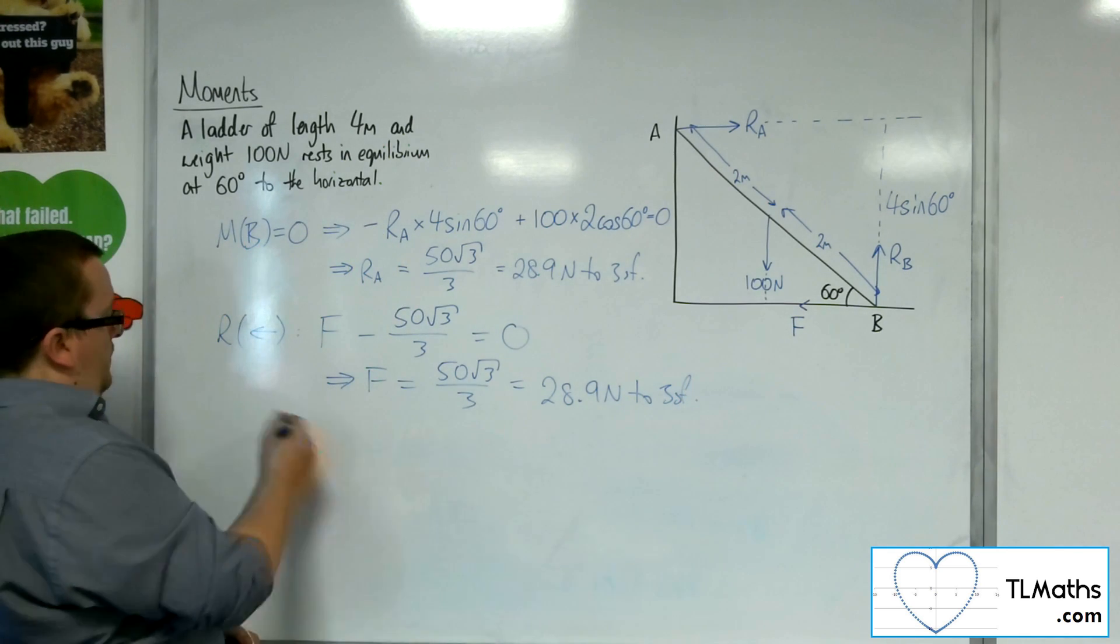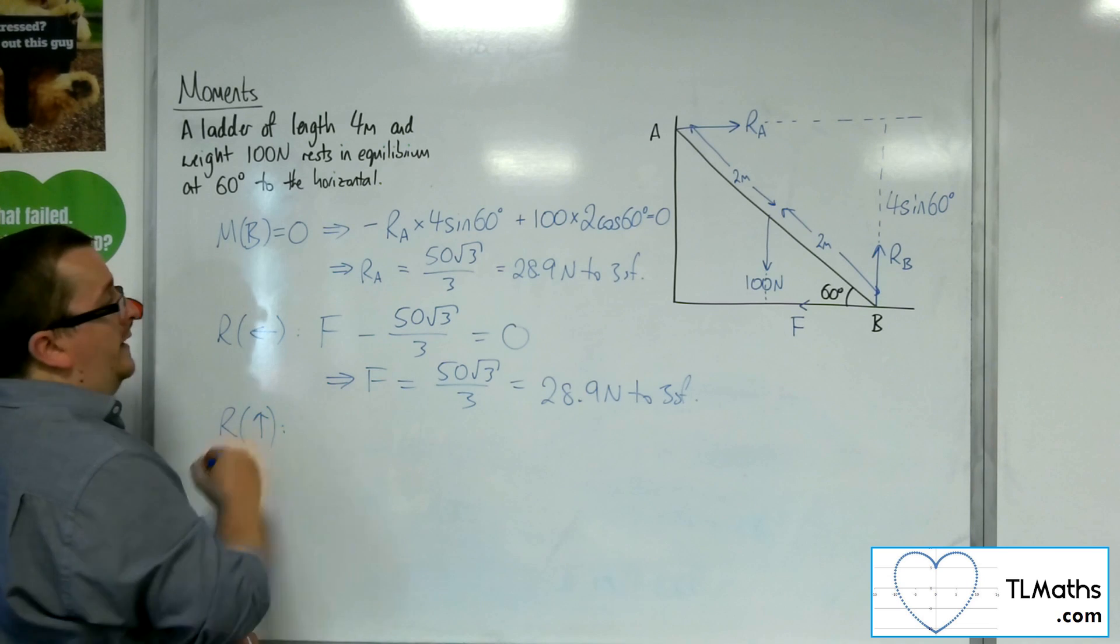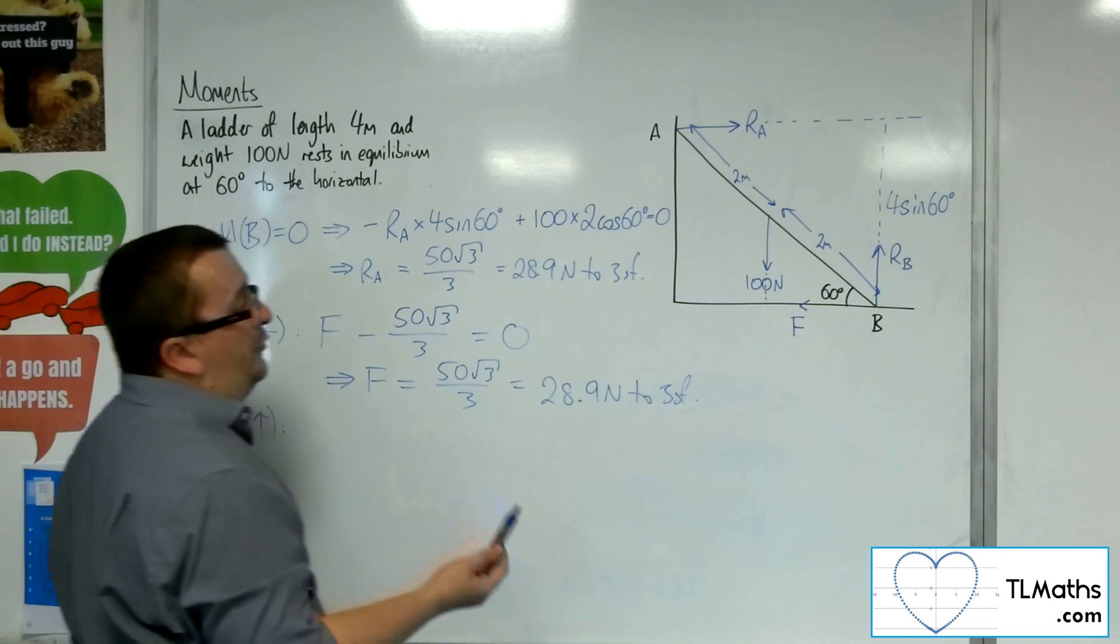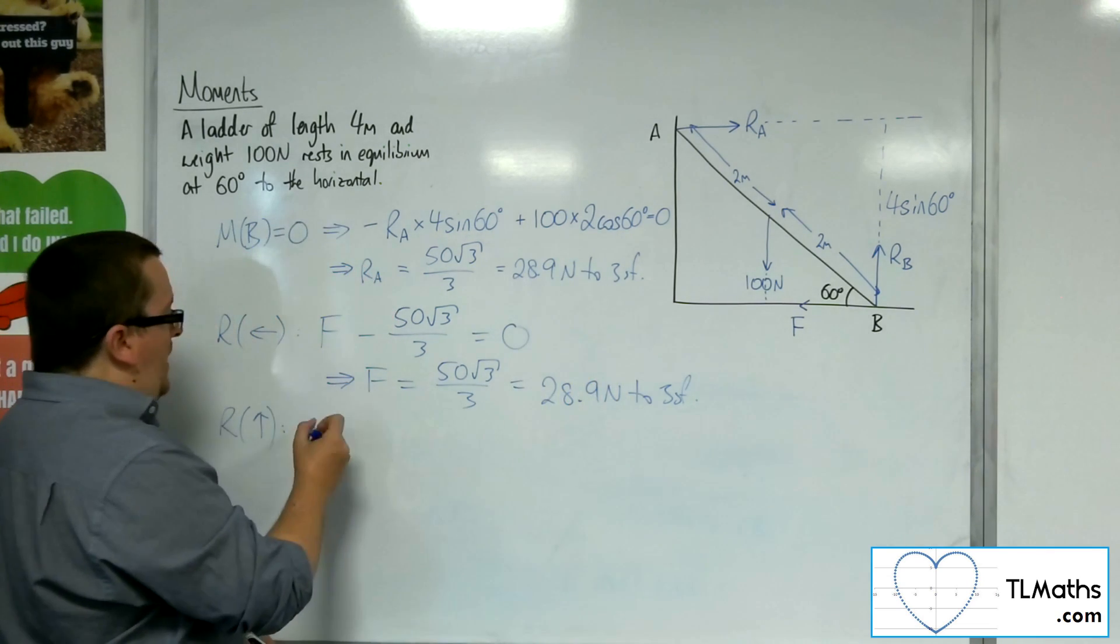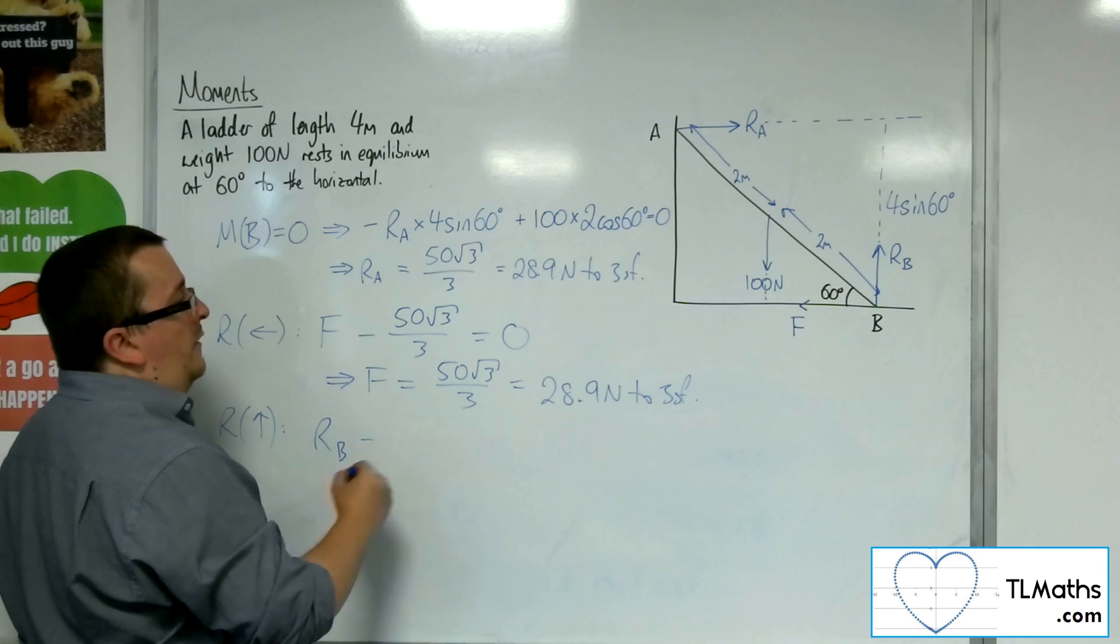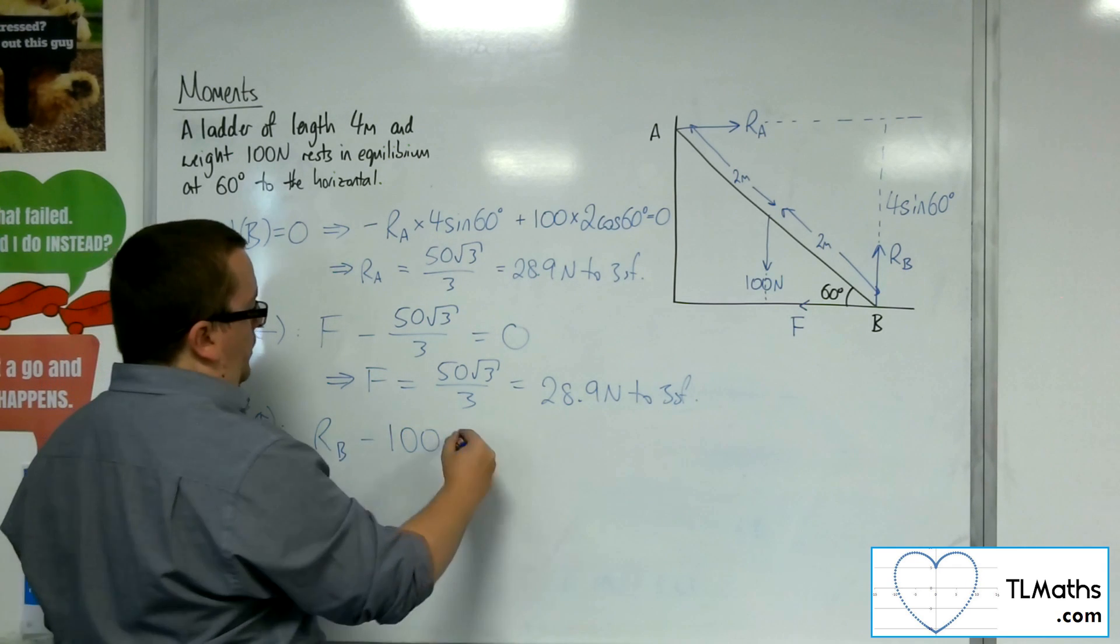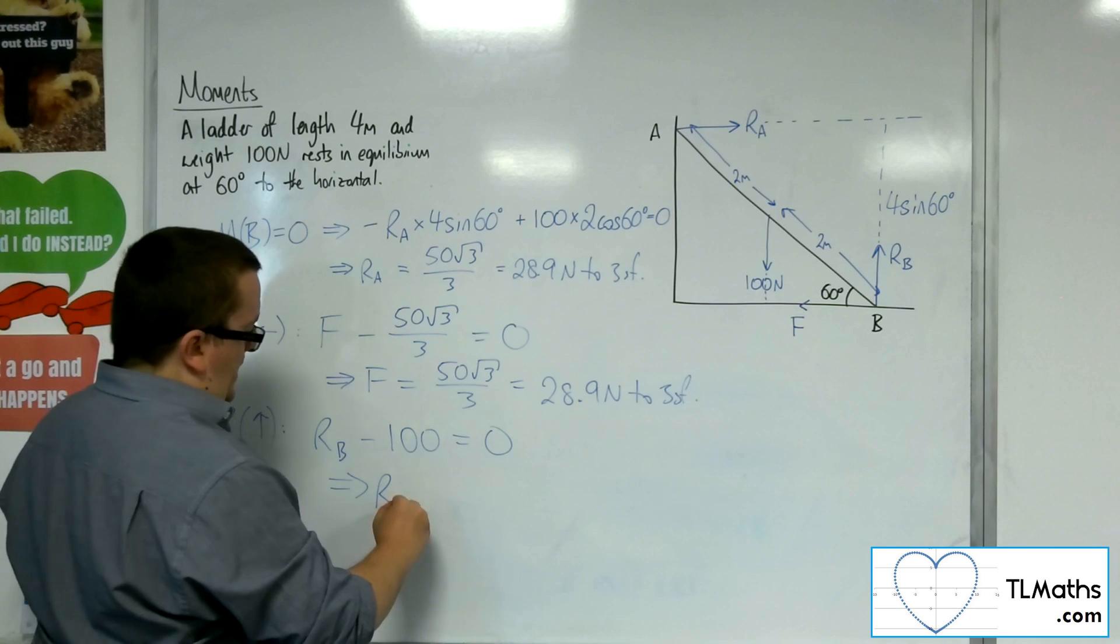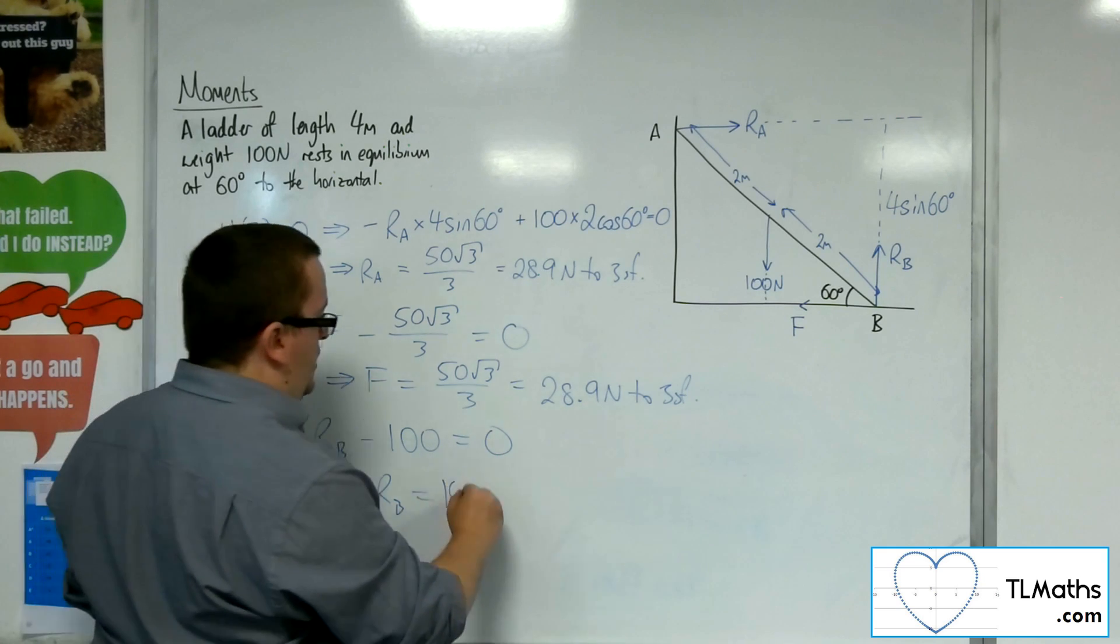If I do a similar problem, or a similar case, of resolving vertically, well, I've only got two forces working vertically. I've got RB working upwards. I've got the 100 newtons working downwards. And that's got to be 0.